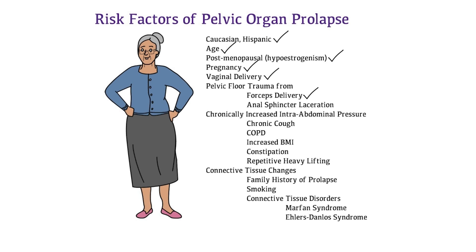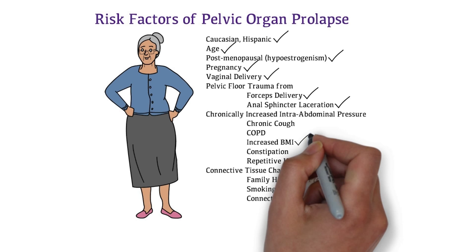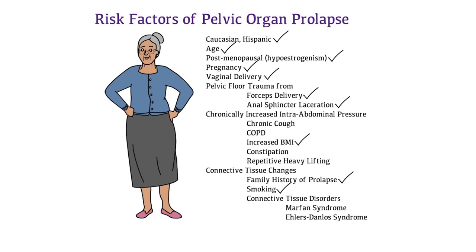She had 1 assisted delivery with forceps and a 3rd degree laceration. She is a smoker and has a 15 pack year smoking history. She denies having any chronic cough, COPD, constipation or repetitive lifting. She does have an increased BMI of 29 and reveals that her mother and sister had uterine prolapse.